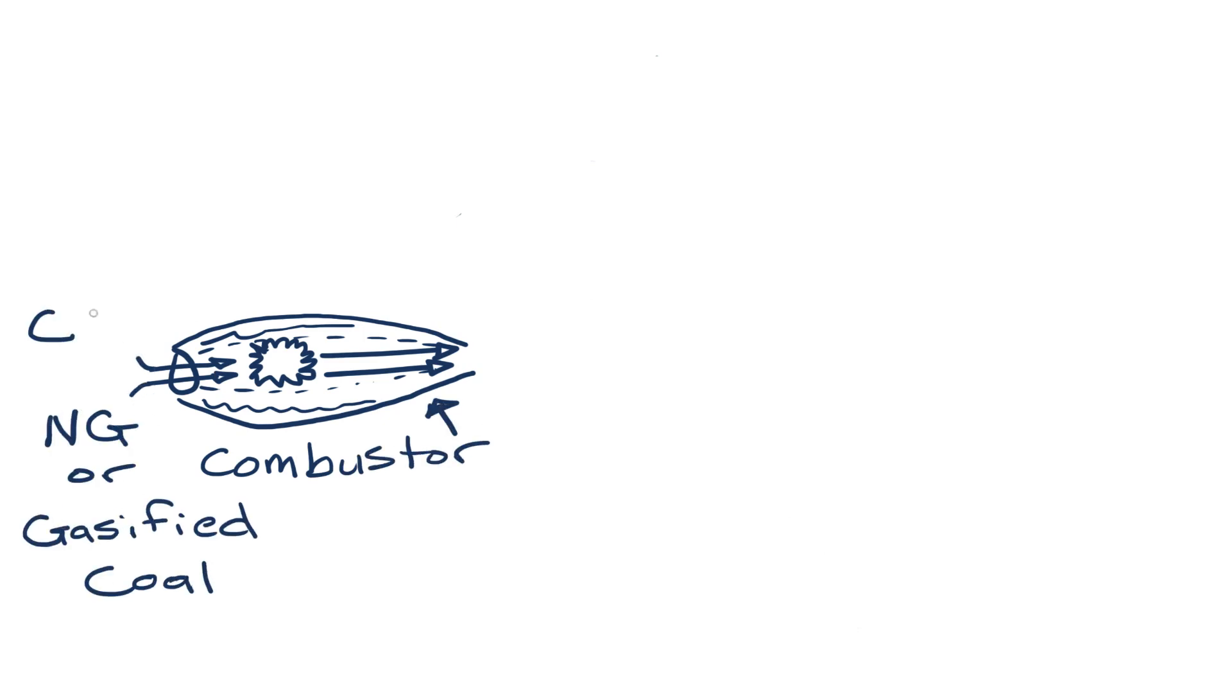It still all starts with a combustor, but that combustor uses natural gas or coal and combines it with CO2 and pure oxygen. When you say, well, CO2, I thought that was the problem we're trying to get rid of here. The Allam Cycle actually uses the CO2 as a useful working fluid in the process.